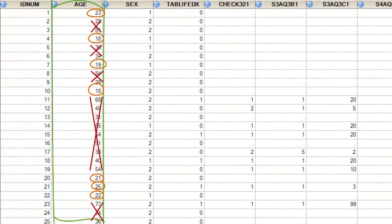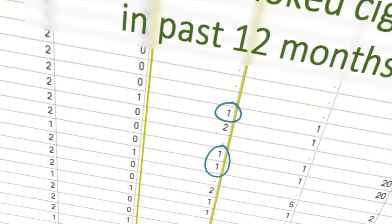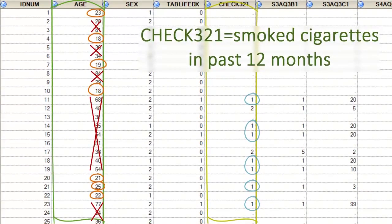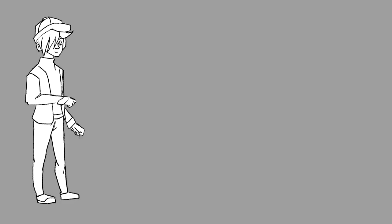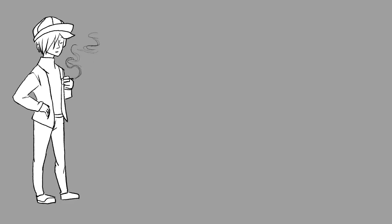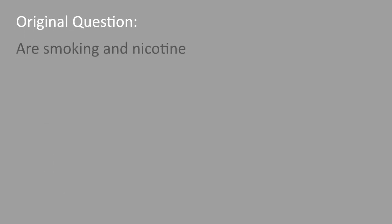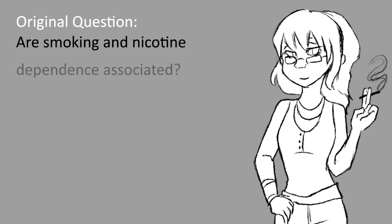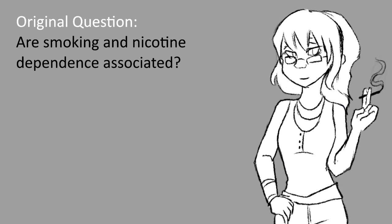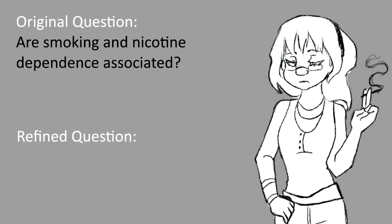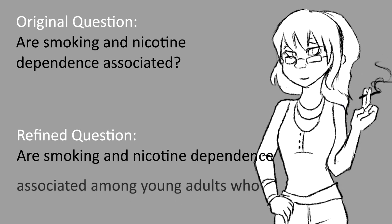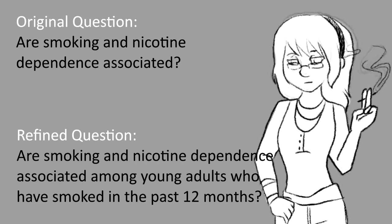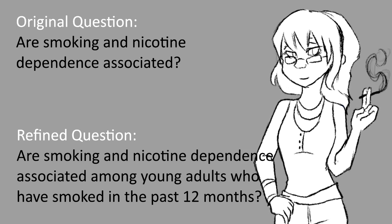We also decide that we want to focus on recent smokers, rather than individuals who've smoked more than a year ago. So the original research question is further clarified to include the association between smoking and nicotine dependence, but only among young adults who have smoked in the past 12 months. The research question is not changed; rather, the question will be asked based only on a subset of the observations available in a specific dataset that will help answer the research question.